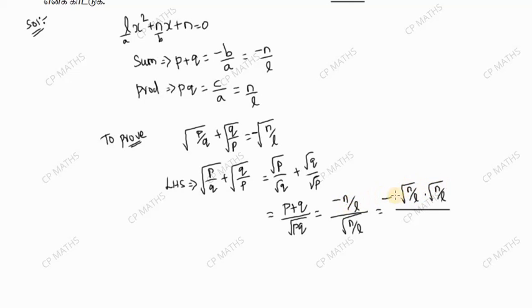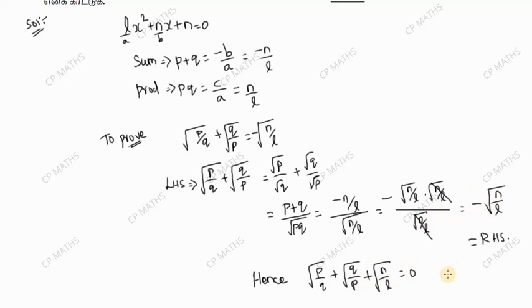We will multiply by root of n by l. If we multiply by root of n by l and cancel the root of n by l, we get root of n by l and then prove root of RHS.